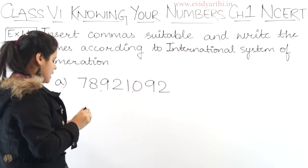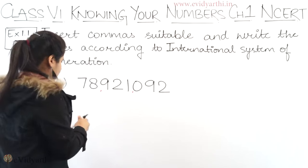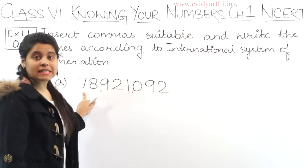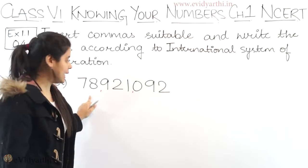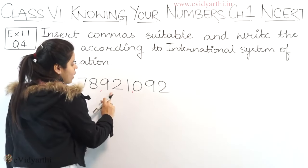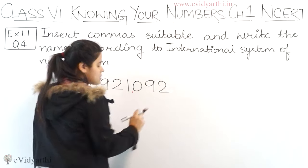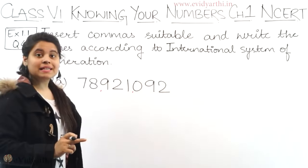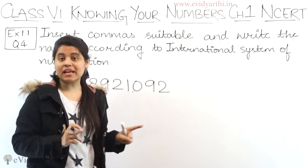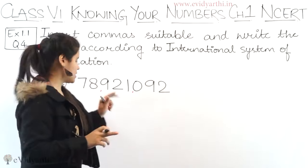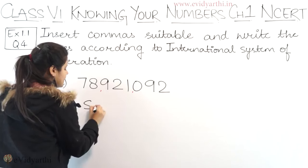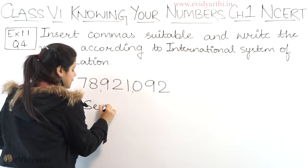So this means, first of all we have to look at the first two digits, which are 78. After 78, there are 6 digits. According to the international system, 6 digits after a number means million. So this will become 78 million.